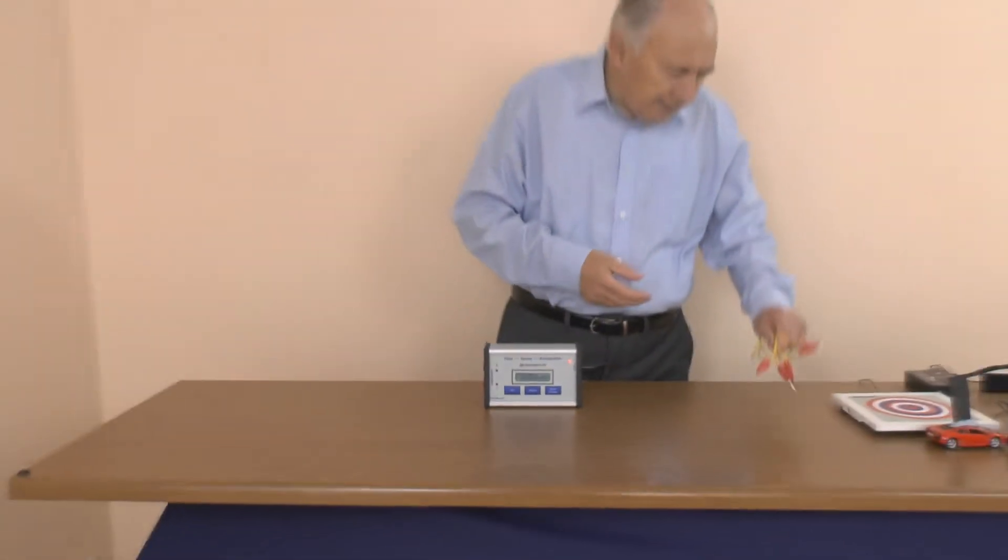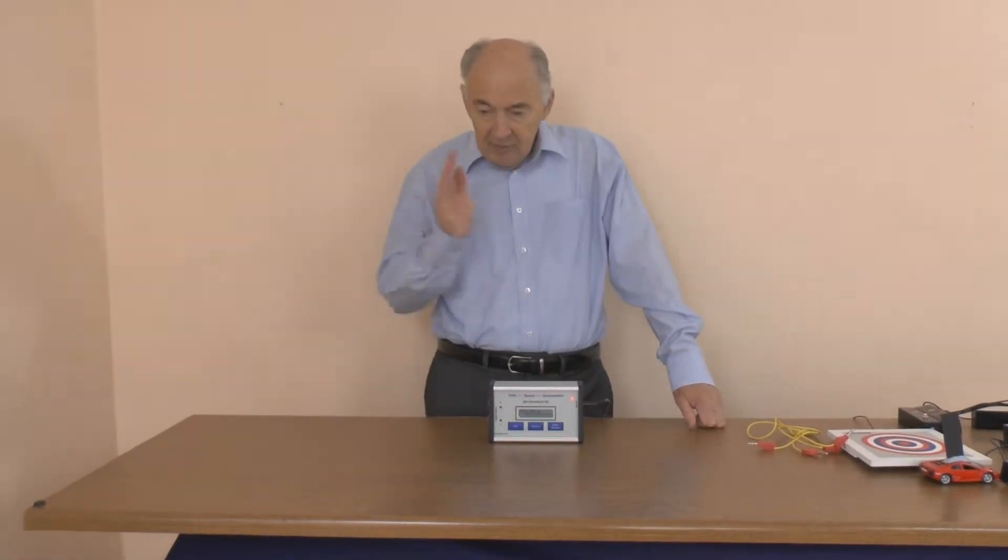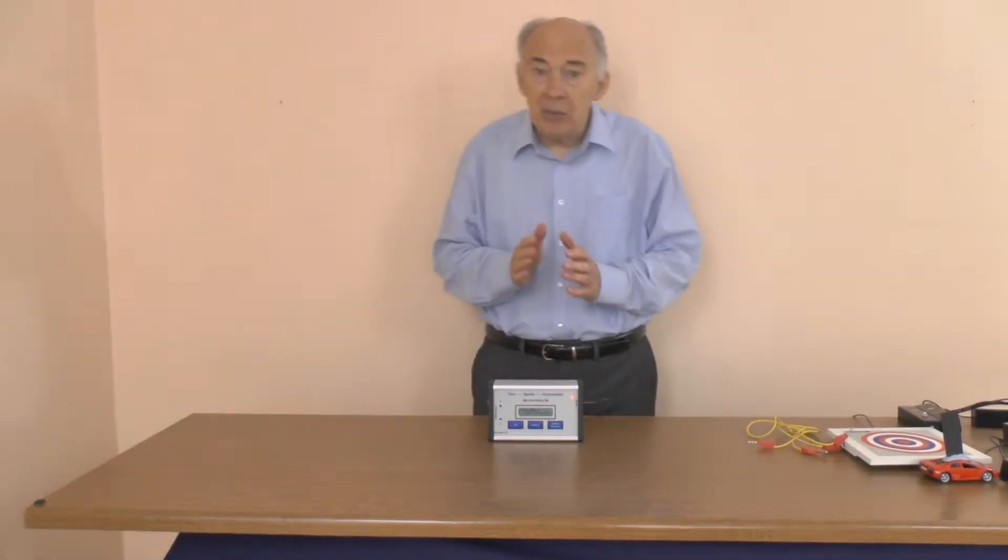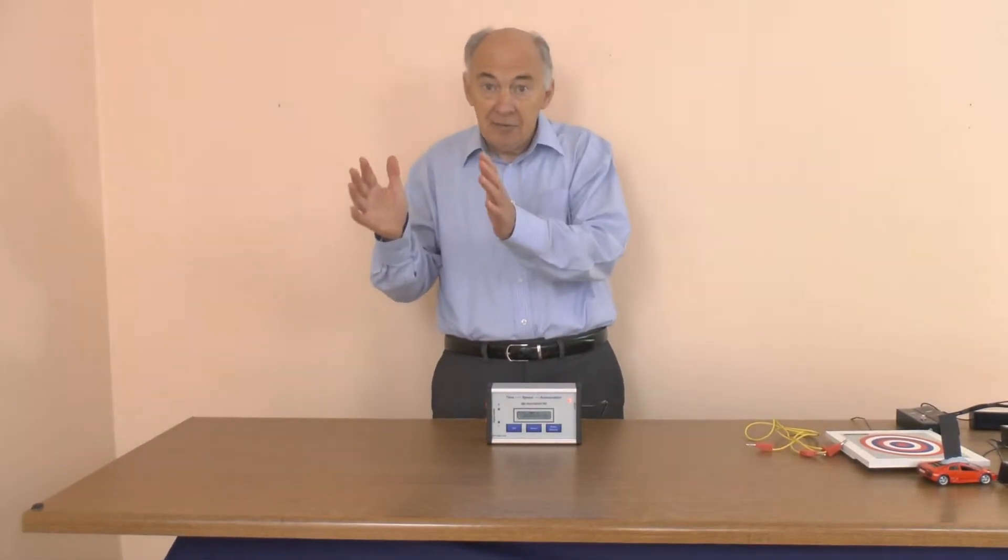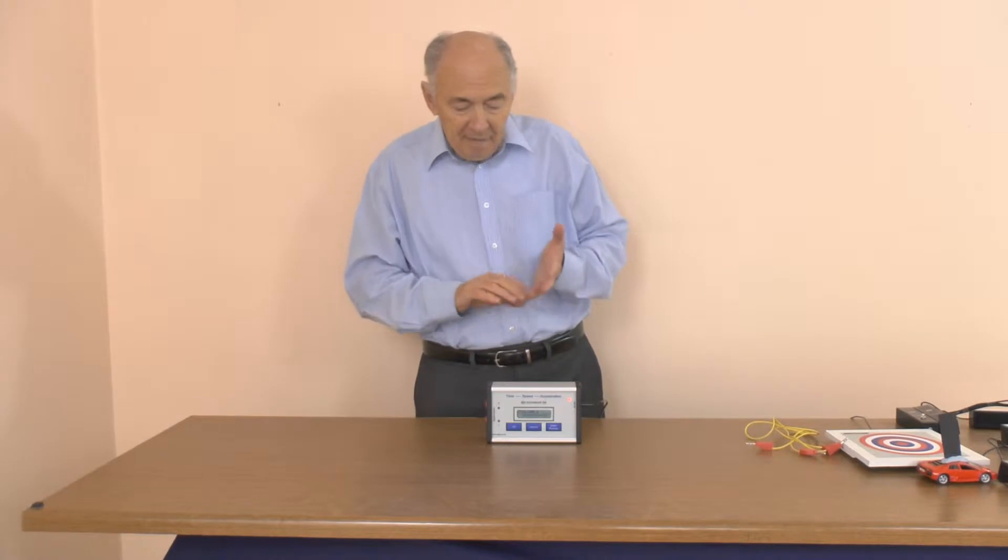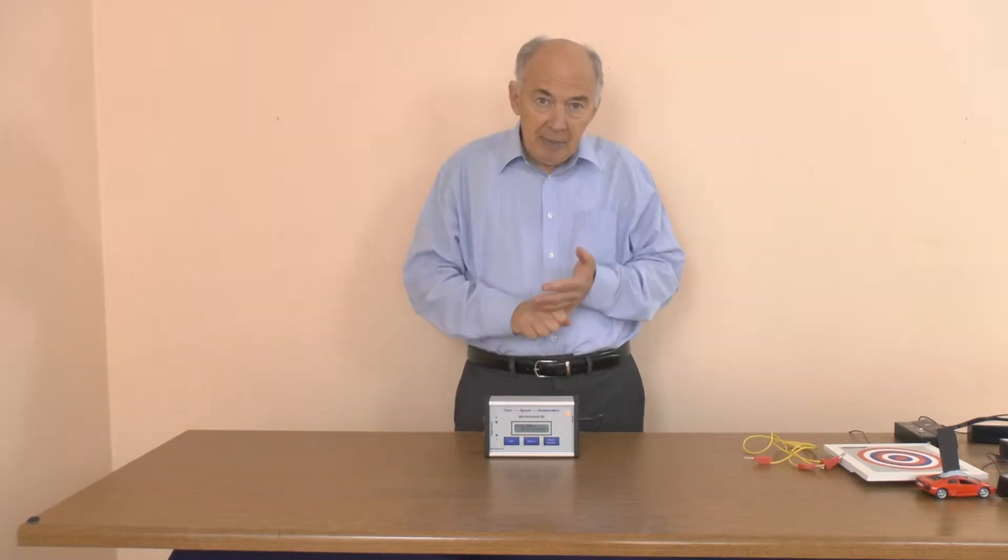We also have an event timer which gives you events themselves. The time interval which we just looked at is simply subtracting the two events to get the interval. We have a fast timer which measures down to tens of microseconds, and we have a gap timer.